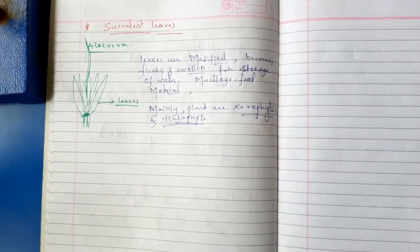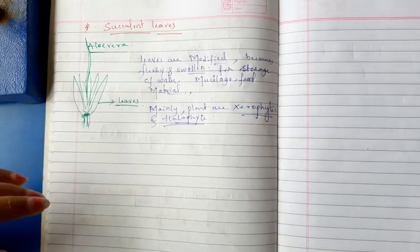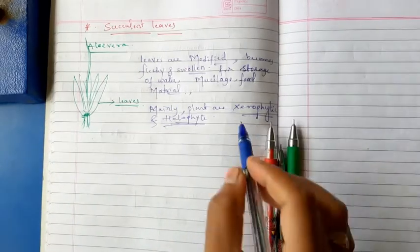The succulent leaves are nothing but the fleshy and swollen leaves for the storage of food and water. This is mainly seen in case of xerophytes — plants growing in areas with water scarcity, like desert regions — and halophytes, the plants which are grown under saline water conditions. In both xerophytes and halophytes, we can see the succulent leaves.